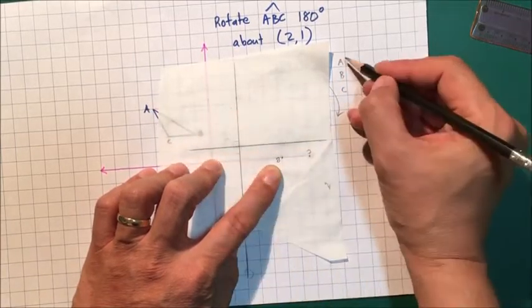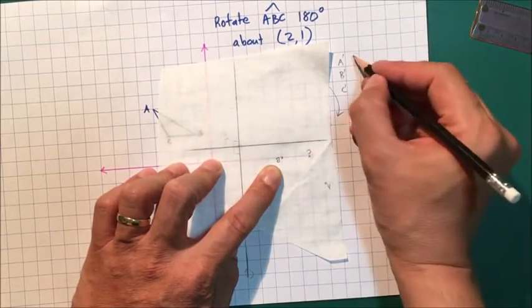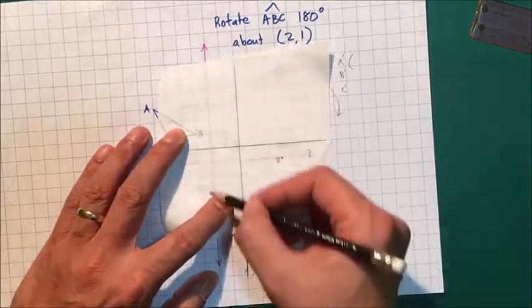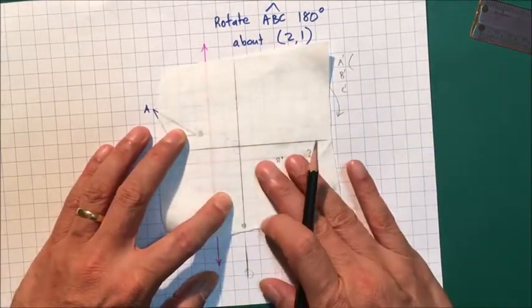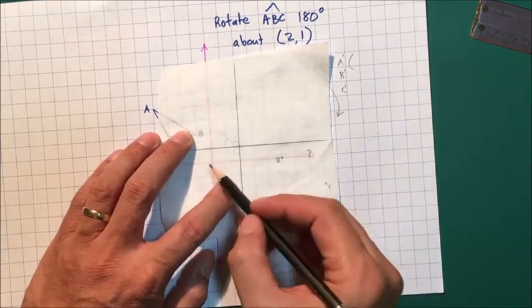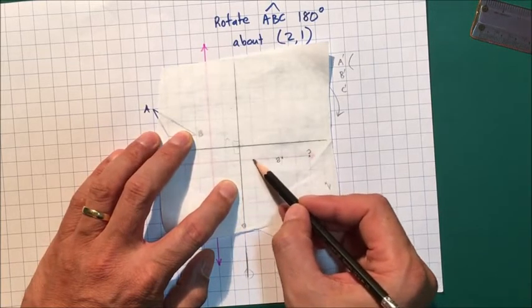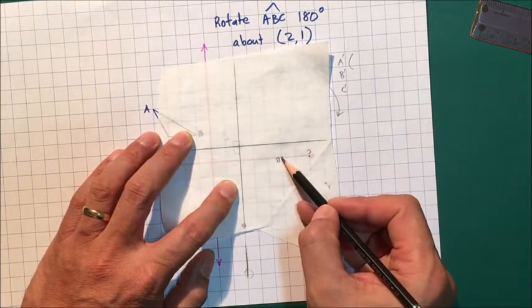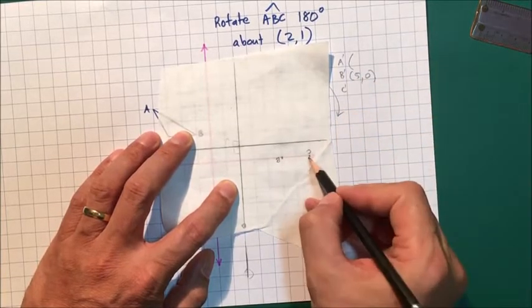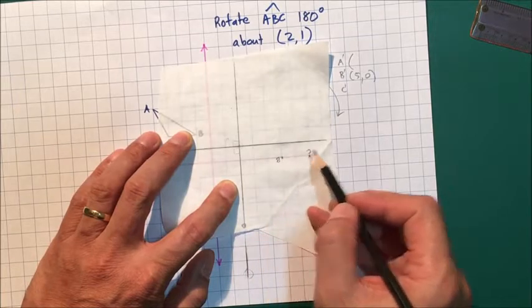These are going to be the image of A, B, C, so A dash, B dash, C dash, and just give the coordinates. So now I need to pay attention again to the pink, or the original axes that is on the sheet. So I can just find where B is, which is here. So 1, 2, 3, 4, 5, 0. So B is 5, 0. C is over here, so 1, 2, 3, 4, 5, 6, 7, 0.